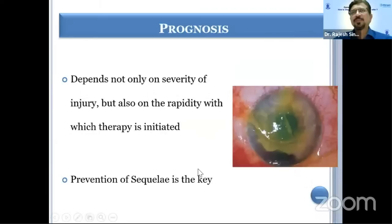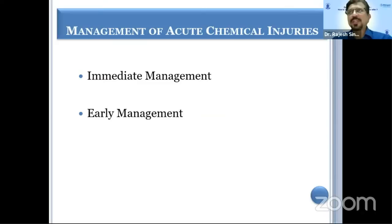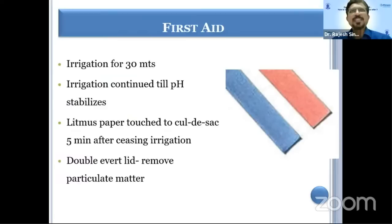The prognosis depends not only on severity of injury, but also on the rapidity with which therapy is initiated. The management of acute chemical injury can be divided into immediate management — taking care of the chemical that has come into the eye — and early management, like taking care of the inflammation. The first aid or immediate management is irrigation.